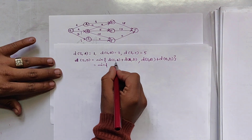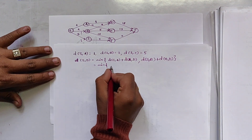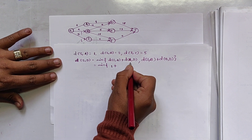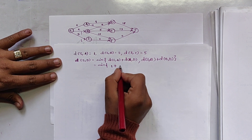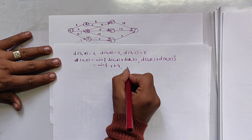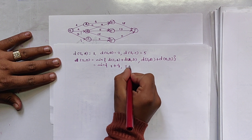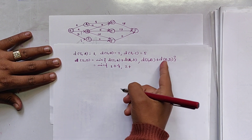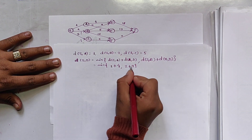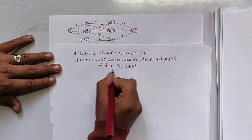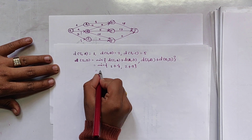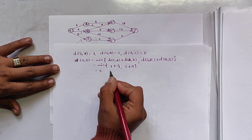d(s,a) is 1, and d(a,d) is 4, giving 5. d(s,b) is 2, and d(b,d) is 9, giving 11. The minimum value between 5 and 11 is 5. So d(s,d) = 5.